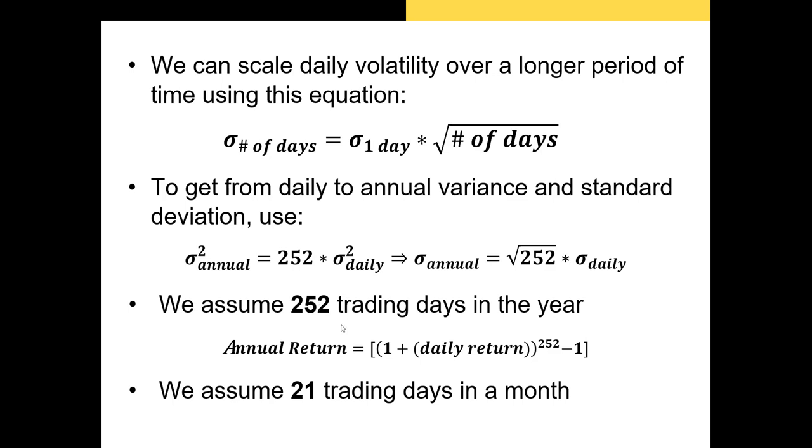The reason we use 252 is because there are 252 trading days in a year. So all we do is just take standard deviation times square root of 252. That'll get us our annual standard deviation.